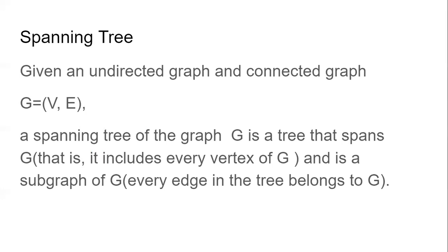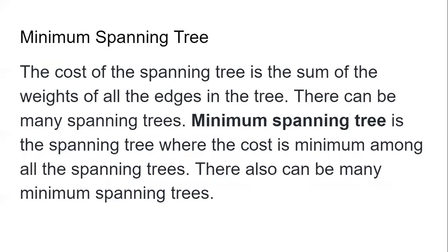Given an undirected and connected graph, a spanning tree may be viewed as a tree that represents a subgraph of the graph. There are certain properties that a spanning tree should hold. The spanning tree should have no cycle, and it should consist of all the vertices that are in the graph with zero cycles.